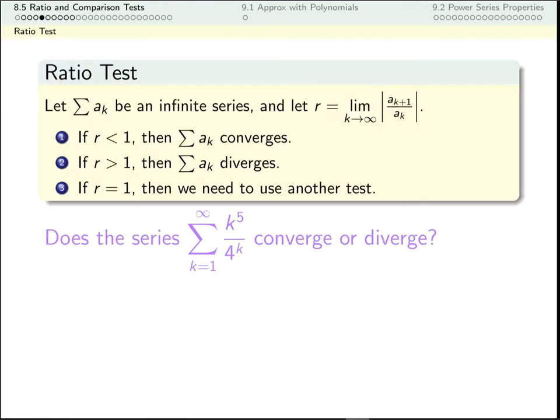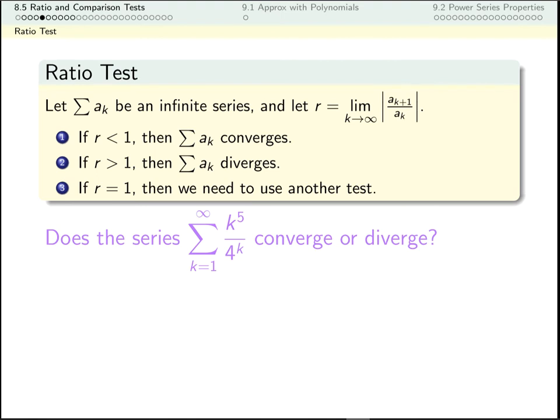Here's a similar example. I want you to use the ratio test and determine whether the series converges or diverges. If I wanted to rule out the divergence test in my head, again, I would notice that I have a polynomial function divided by an exponential function. Exponentials grow much faster than polynomials, so the limit of my sequence, the terms being added up, is indeed zero. That means maybe we converge, maybe we diverge. We need another test.